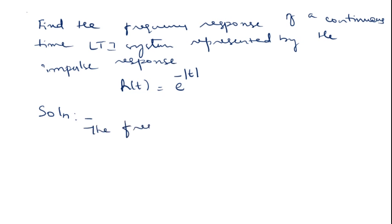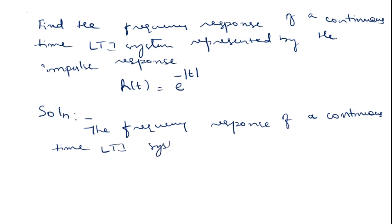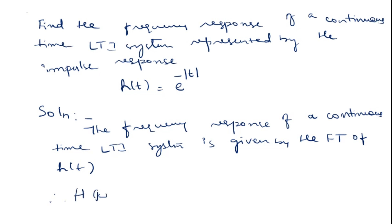The frequency response of a continuous time LTI system is given by the Fourier transform of H(t). Therefore, H(jω) is equal to the integral from minus infinity to infinity of H(t) times e^(−jωt) dt.